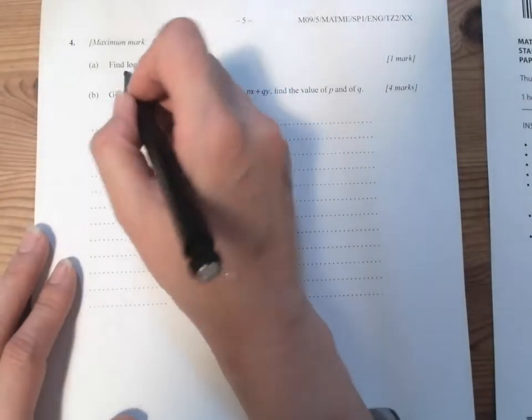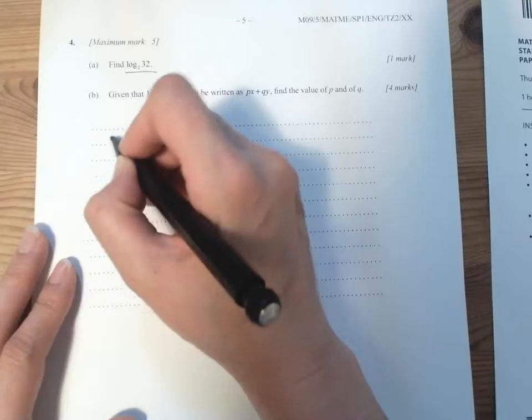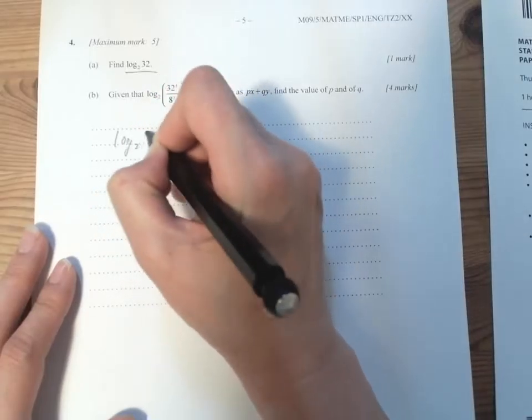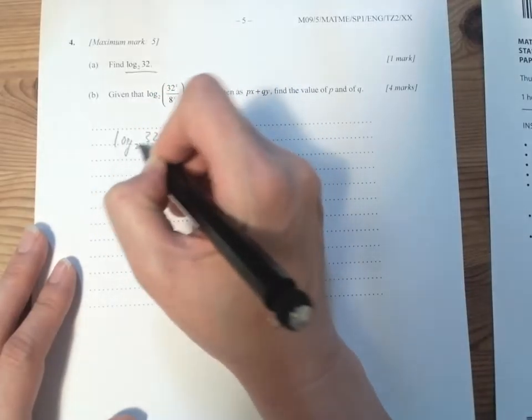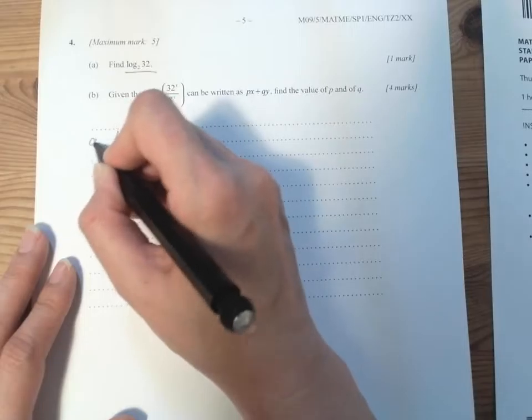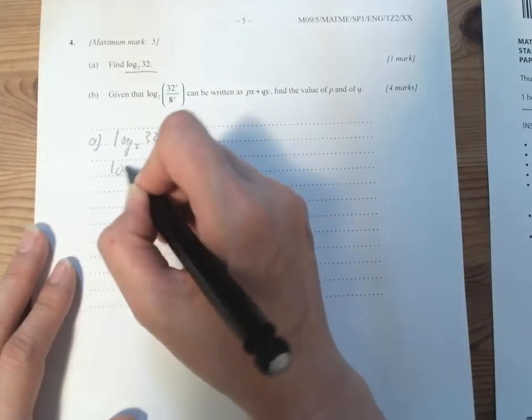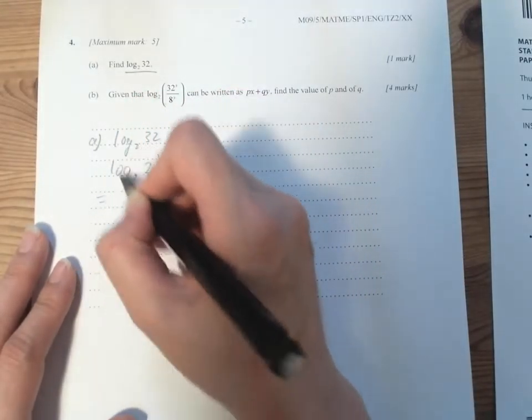Coming up with the next question, we got log here. So we have log 2, 32. We know that 32 is some kind of a base of 2. So we have log 2, 2 to the power of 5. And therefore, it is 5.